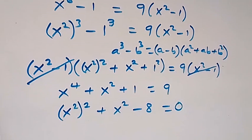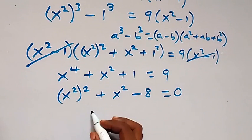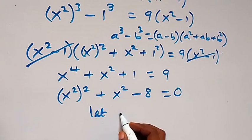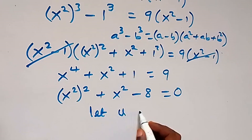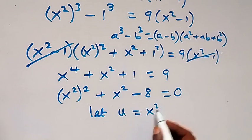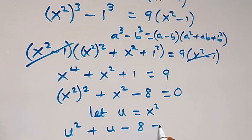From here we can let x squared be a letter. So let u equal x squared. Then we now say this is u squared plus u minus 8 equals 0.